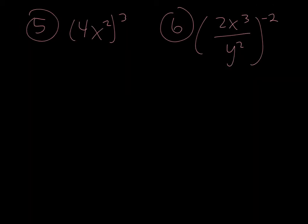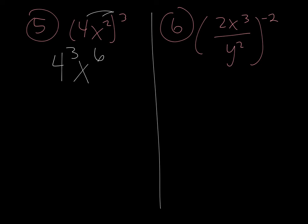The next one: 4x squared to the third power. Distribute that third power, so it becomes 4 to the third times x to the sixth. You have to actually take 4 to the third power: 4 times 4 times 4 is 64, giving 64x to the sixth.